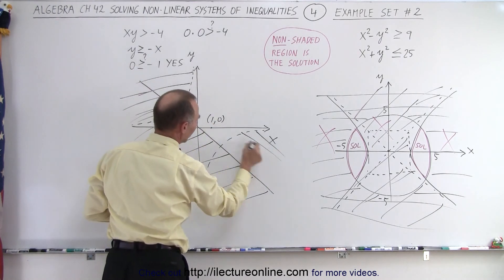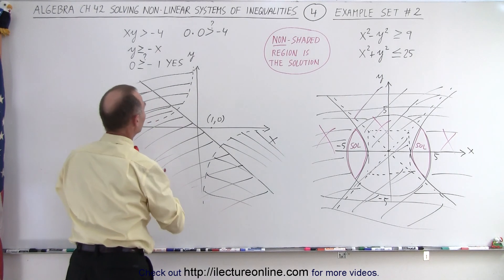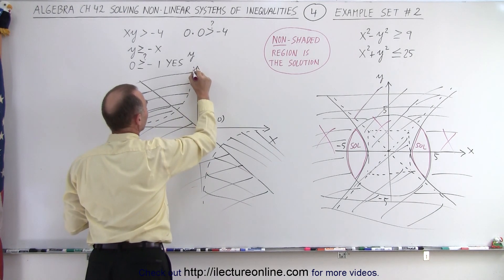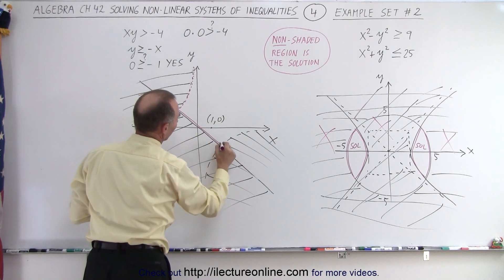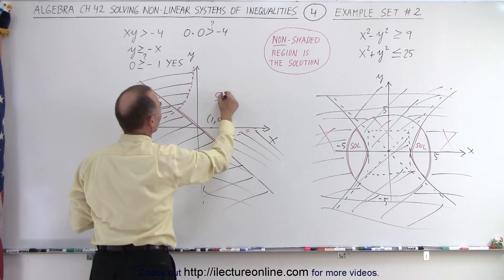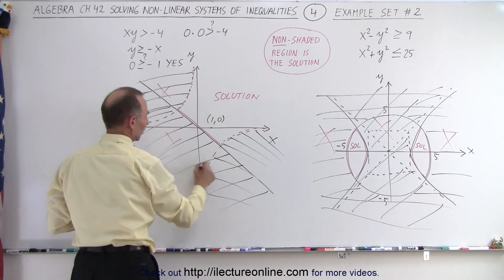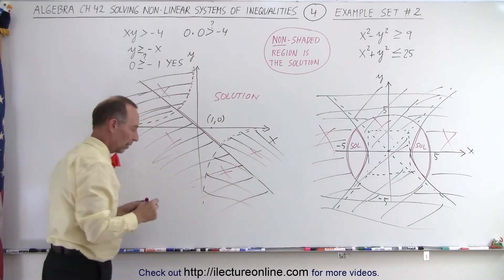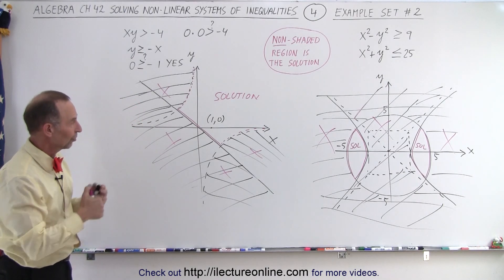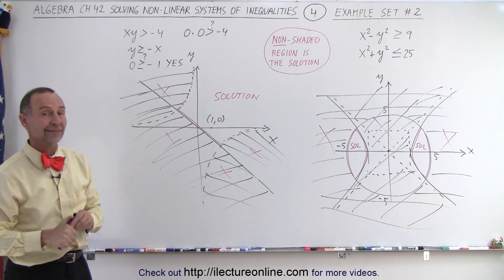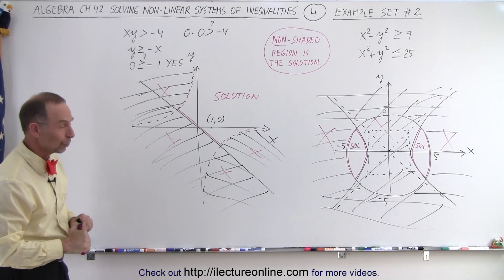So we can get rid of those regions. The only portion left that makes up the solution is the region bounded by this, by this, and by this. So here's the solution — we get rid of everything else outside that's not part of the solution. And that is how we find the solution to a system of inequalities — linear or nonlinear, it doesn't matter. There it is; that's the method that we use.